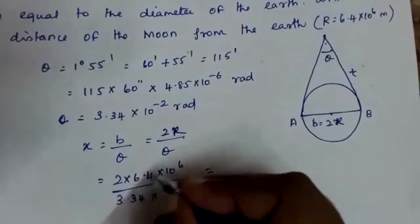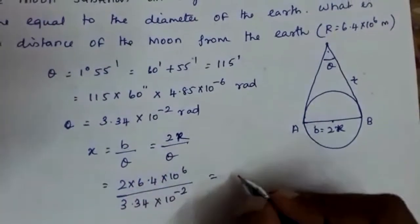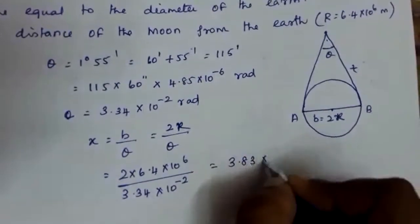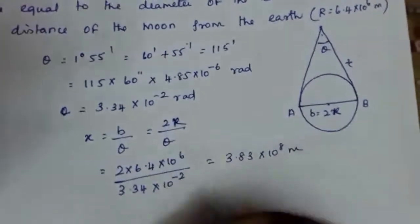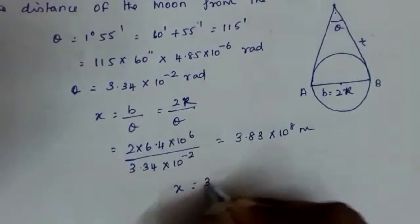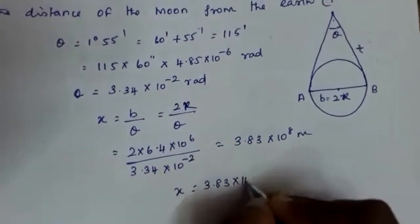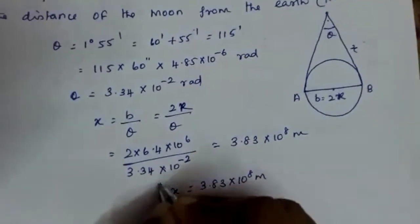Now if you multiply and divide, you will be getting the value as 3.83 into 10 raised to 8 meter. So your x value is 3.83 into 10 raised to 8 meter.